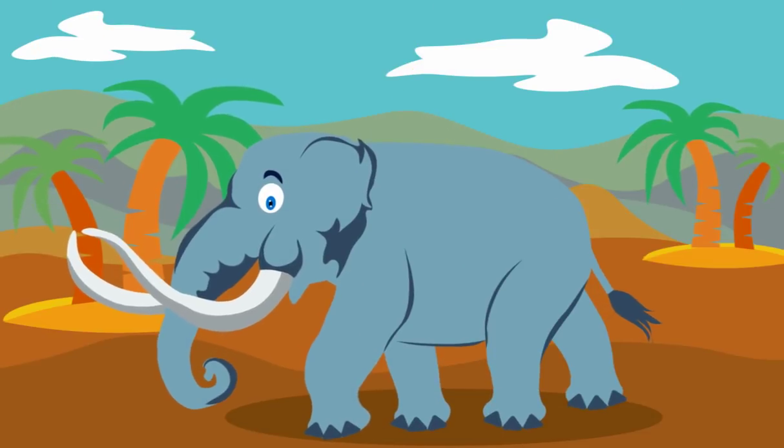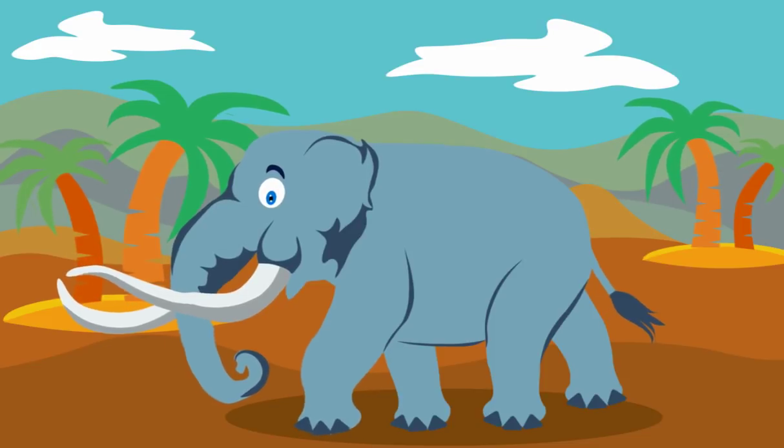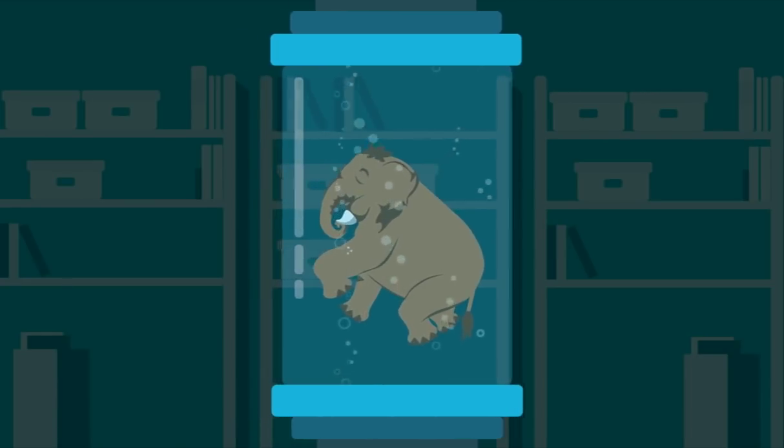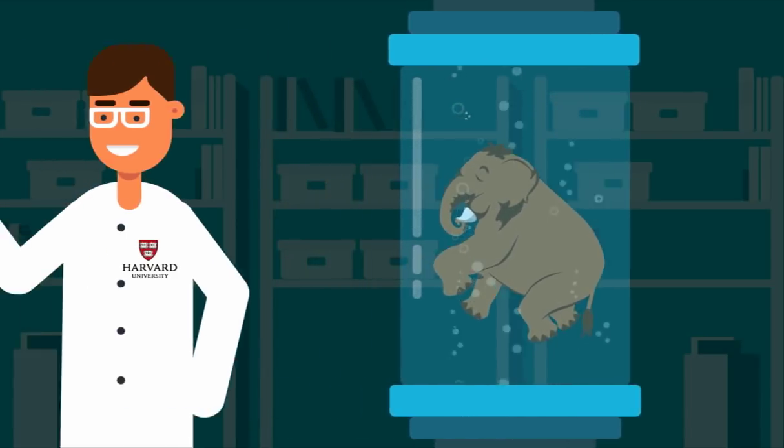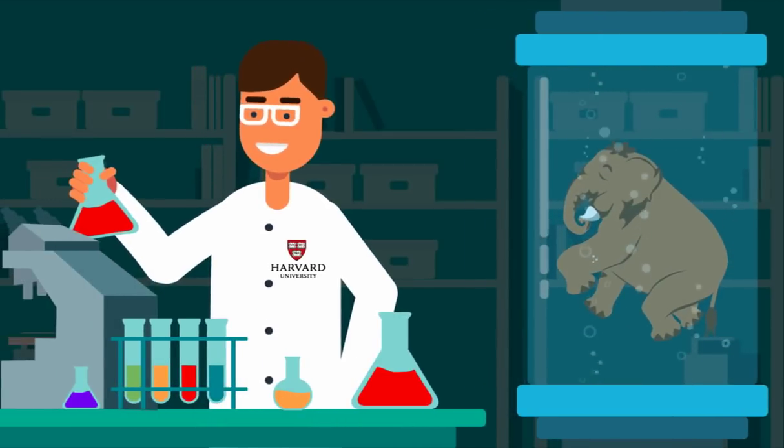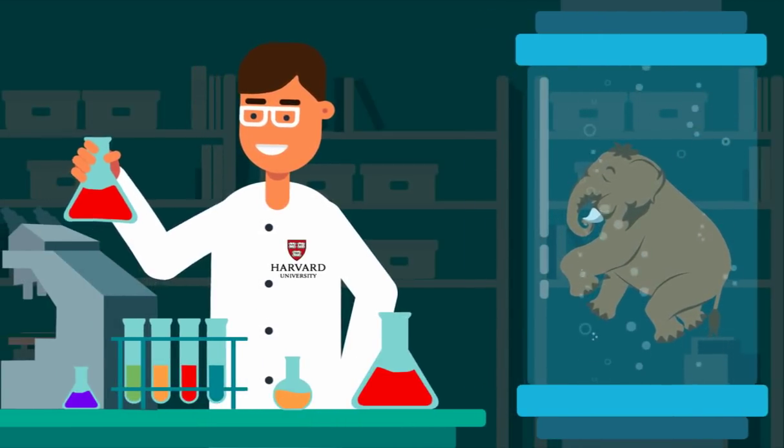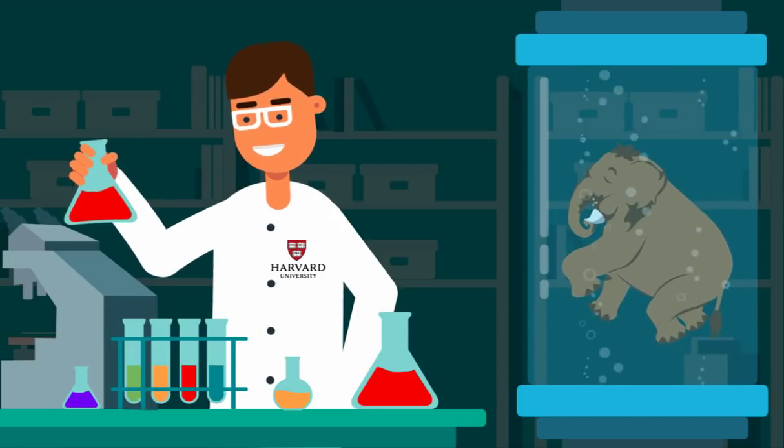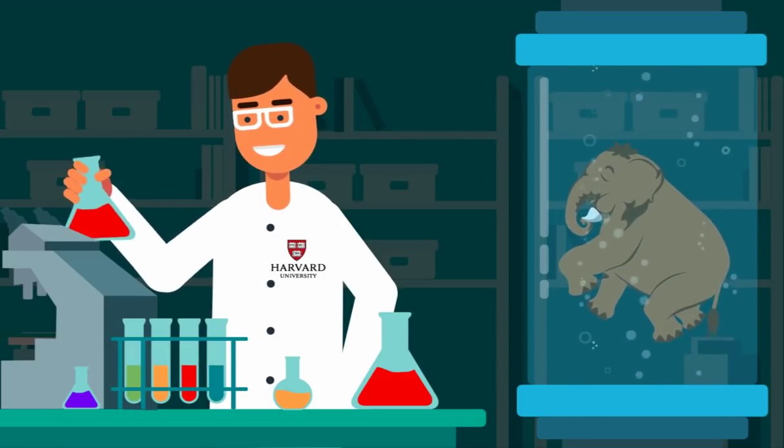From that modified elephant chromosome, the next step would be to use an elephant as a surrogate, or grow an embryo in an artificial womb. In 2017, scientists at Harvard announced they were close to creating a hybrid mammoth-elephant embryo and could make it a reality within two years.